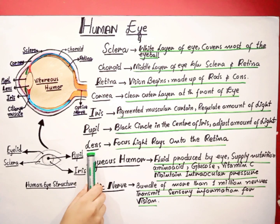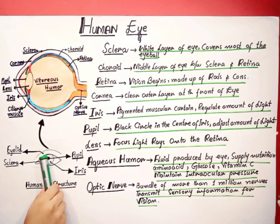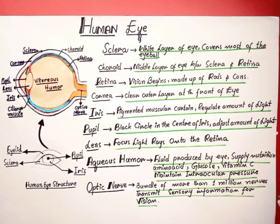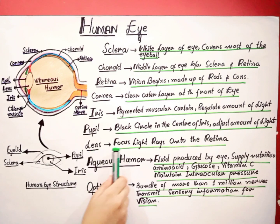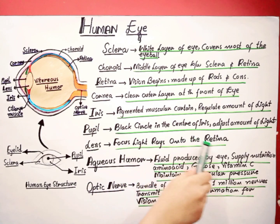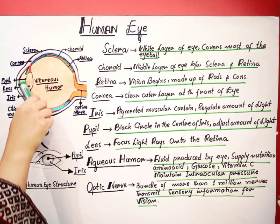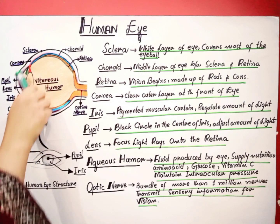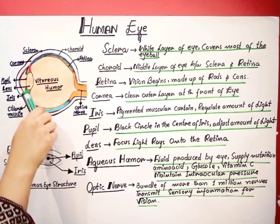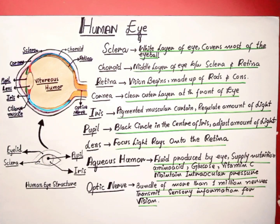The next part is the lens. Behind the iris, there is a transparent biconvex flexible disc which is called the lens. The function of this lens is to focus light rays onto the retina.